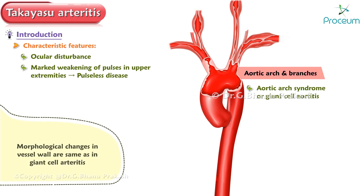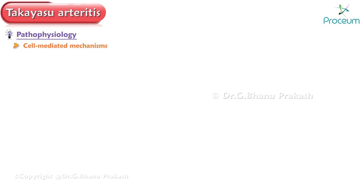Morphological changes in the vessel wall are the same as in giant cell arteritis. Next, we'll consider the pathophysiology. The pathogenesis of Takayasu Arteritis, sometimes abbreviated TAK, is poorly understood. Cell-mediated mechanisms are thought to be of primary importance and may be similar to those in giant cell arteritis, often abbreviated GCA.